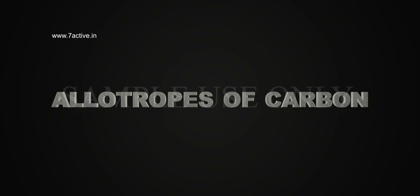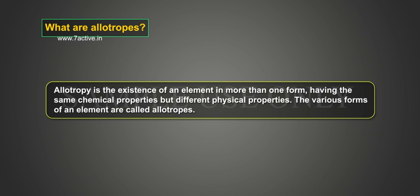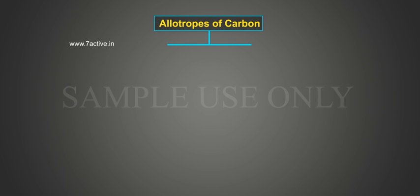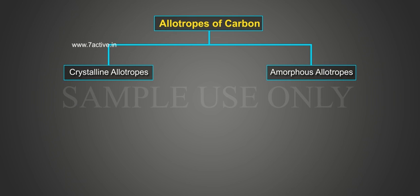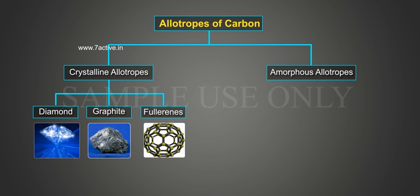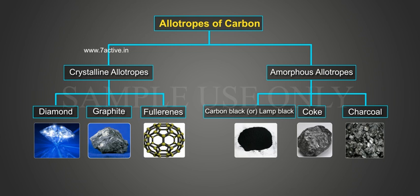In the previous concept you studied anomalous behavior of carbon. In this concept you will study about allotropes of carbon. Allotropy is the existence of an element in more than one form having the same chemical properties but different physical properties. The various forms of an element are called allotropes. Carbon exists in two allotropic forms: crystalline allotropes and amorphous allotropes. Crystalline allotropes include diamond, graphite, and fullerenes. Amorphous allotropes include carbon black, lamp black, coke, and charcoal.